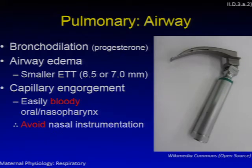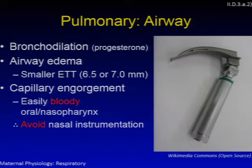There are additional airway changes as well. Progesterone induces direct bronchodilation by a smooth muscle effect and also has an indirect bronchodilating effect by enhancing beta-2 activity. Airway edema is very common, especially at term pregnancy, so if general anesthesia is necessary, smaller endotracheal tubes are required — somewhere in the range of 6.5 or 7 mm in diameter.